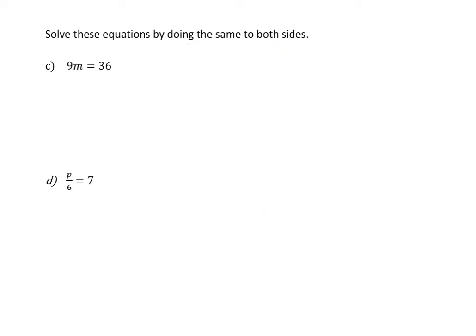My next example is 9m is equal to 36, and I want to work out my value for m. I want to get m by itself, so I need to get rid of the 9. At the moment it is 9 multiplied by m, so to do the opposite of multiplying by 9 is going to be to divide by 9.